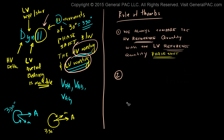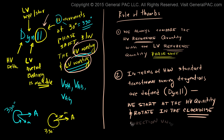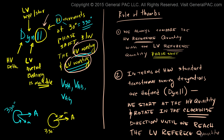The second rule of thumb is that in terms of how standard transformer name designations work — we're talking about how the dyn11 designation is defined — we start at the high voltage quantity and rotate in the clockwise direction until we reach the low voltage reference quantity.